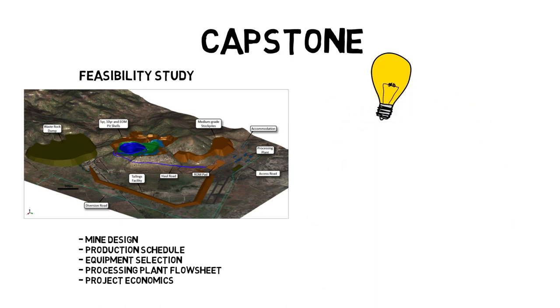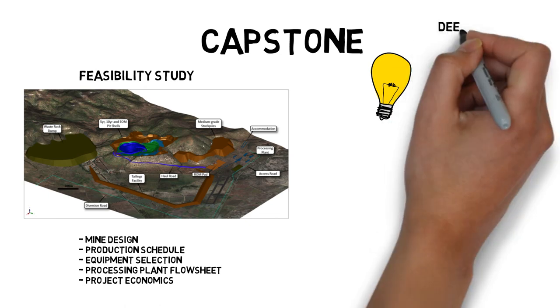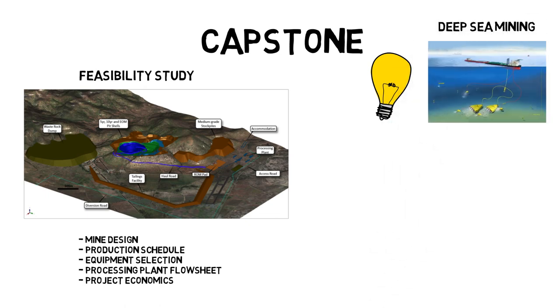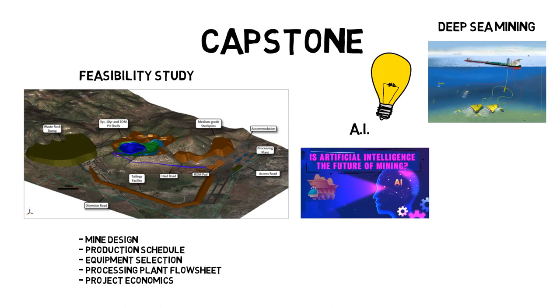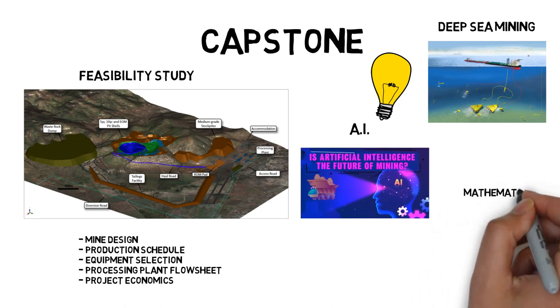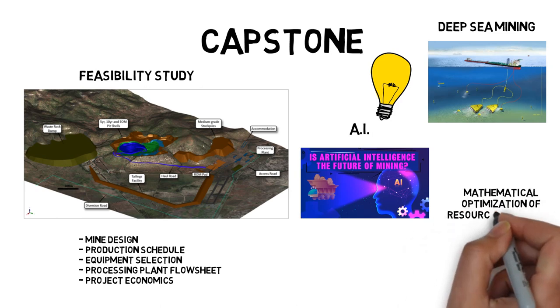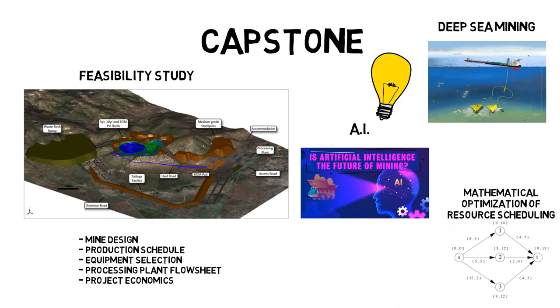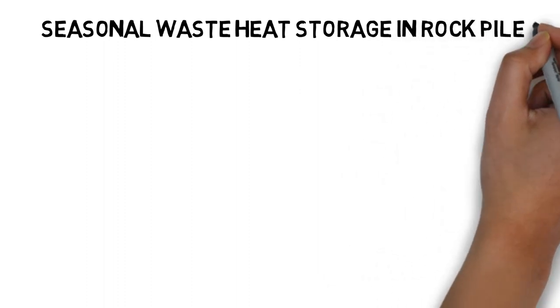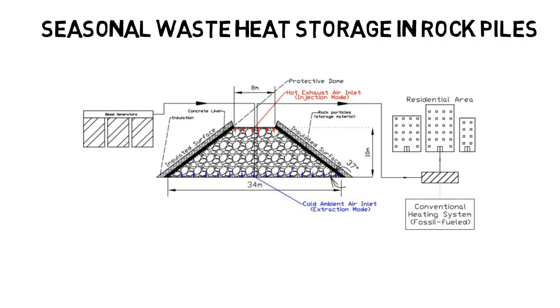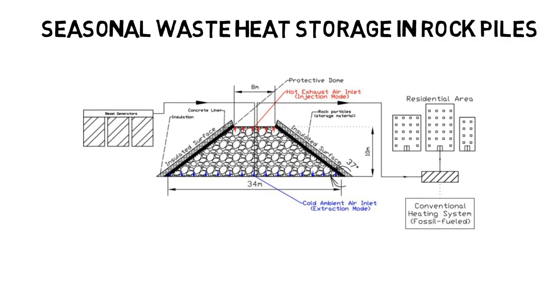However, you are only limited by your imagination in terms of what you can choose for your project. For example, you can look at the feasibility of deep sea mining or applications of artificial intelligence in mining. You can also go really technical and look at mathematical optimization of resource-constrained project scheduling. For me and my teammates, we investigated the viability of seasonal waste heat storage in rock piles for remote communities in cold climate areas.